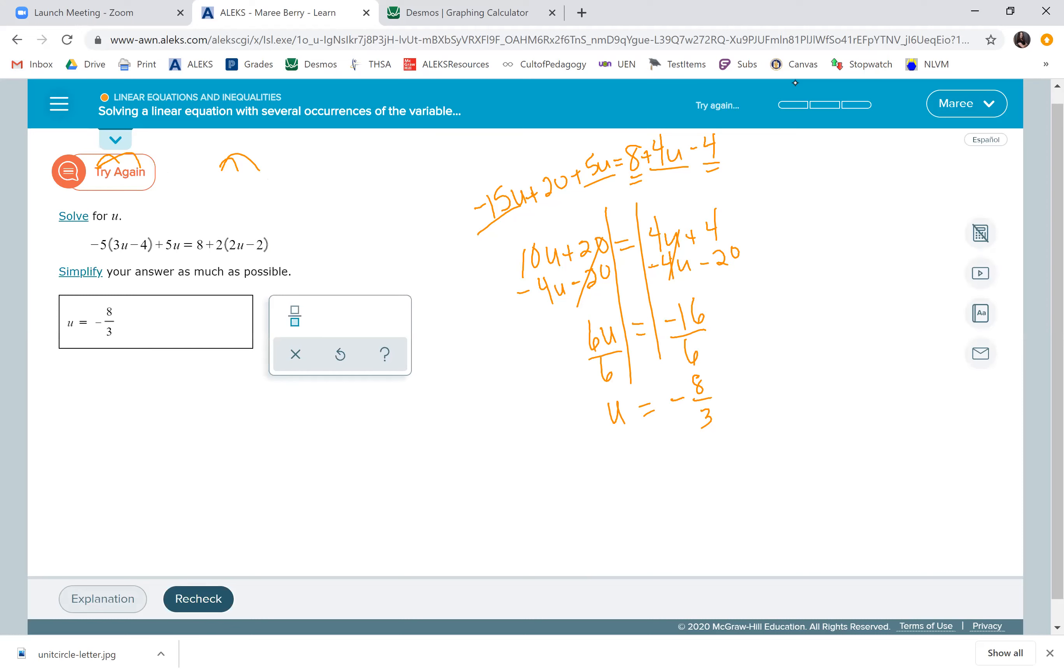Try again. Let's look here carefully. This is negative 15u plus 20 plus 5u equals 8 plus 4u minus 4. So 8 minus 4 is 4. Negative 15 plus 5... oh, that's a negative 10. Aha, right. Because when you add 5 to negative 15, you get negative 10.